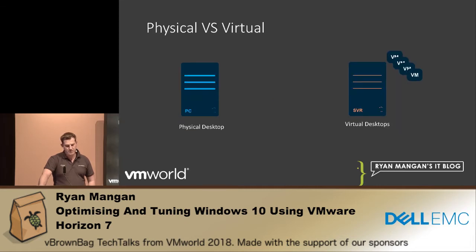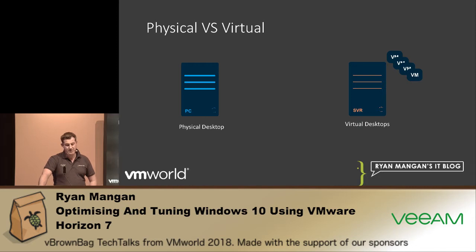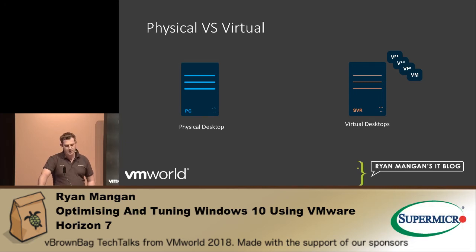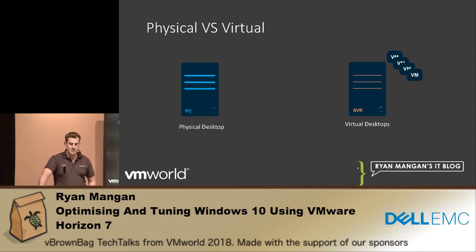Moving on to the guest operating system. Traditionally, a physical PC has a user who logs on one time, it creates a profile, and every time they log on against that PC they have the same profile. The initial logon time is fairly slow, but thereafter it speeds up. With virtual desktops, you're putting lots of users onto a hypervisor, and depending on configuration, the profile may recreate every time a user logs on. That uses CPU cores — shared cores — whereas a physical PC is a one-user solution.